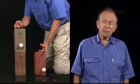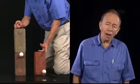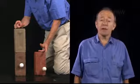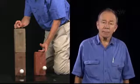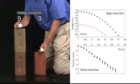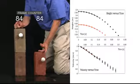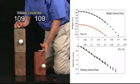Let's plot vertical position y and vertical velocity as functions of time. The slope of velocity is negative, and it seems to be constant.